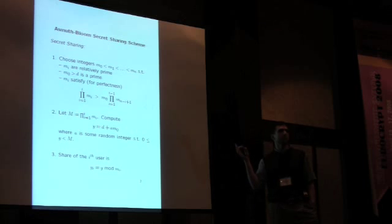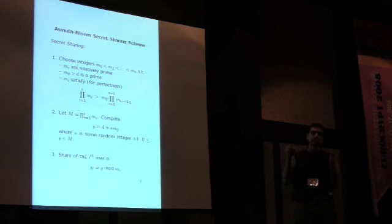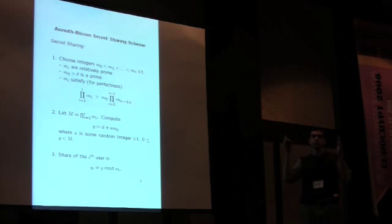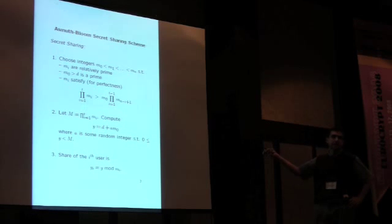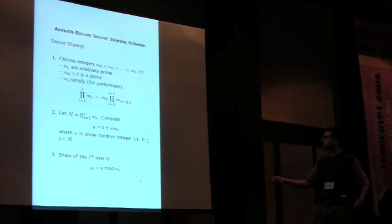But they can get some information about it. So we don't use the whole Y. We just use a fraction of that Y, which is called D. D is the private D, which is mixed with a random number. And Y is then secretly shared using this scheme.